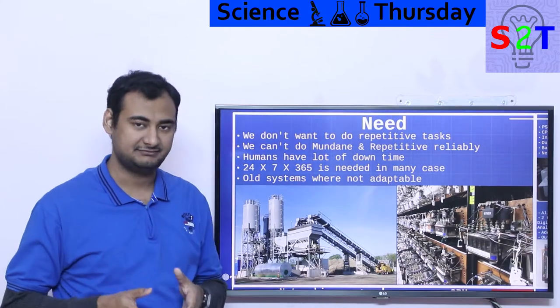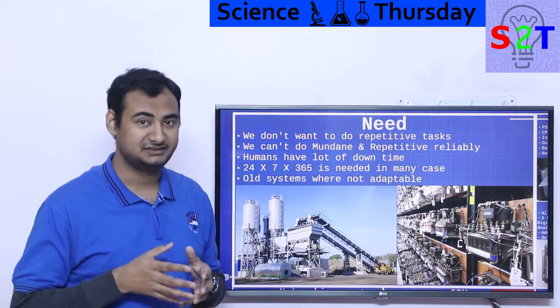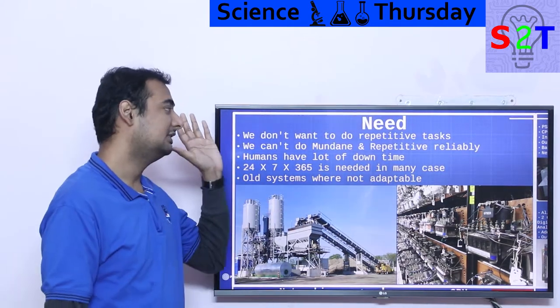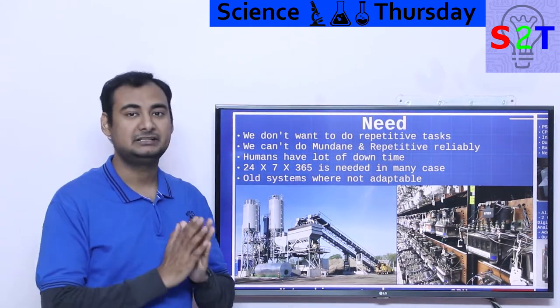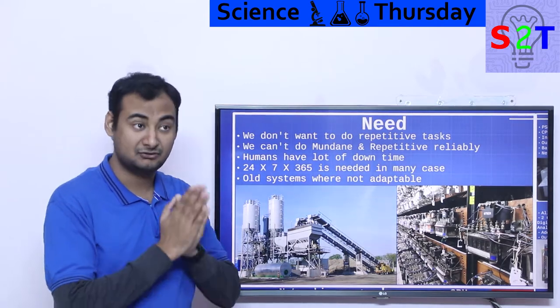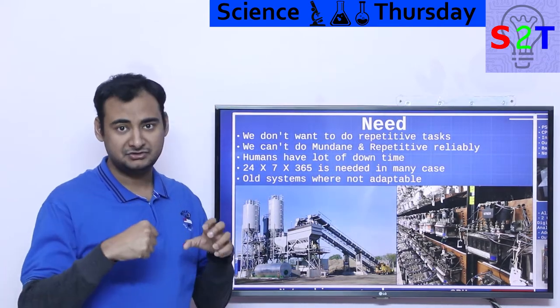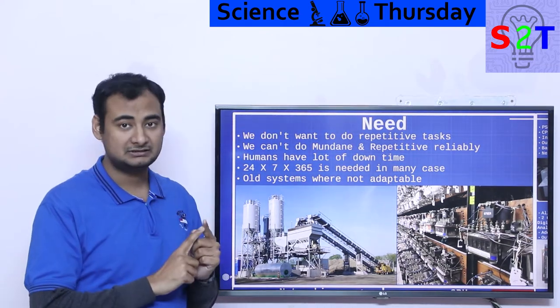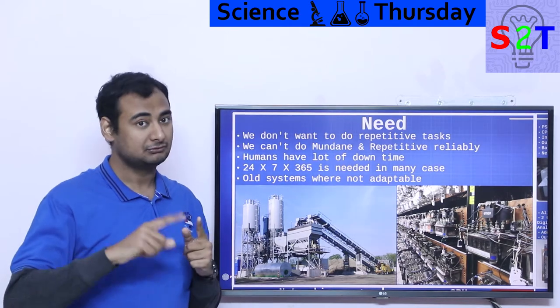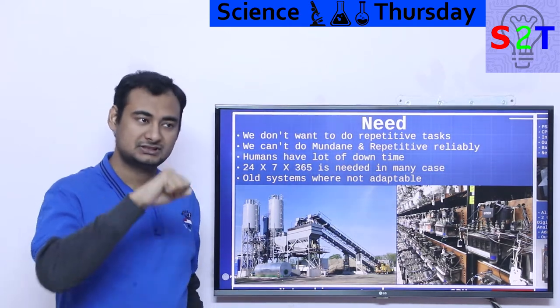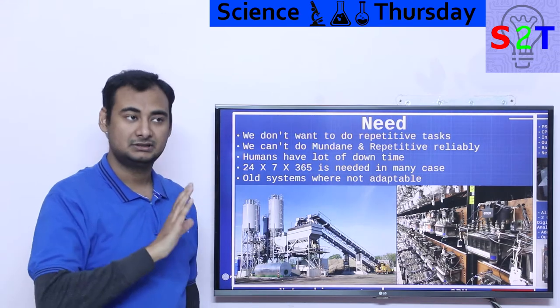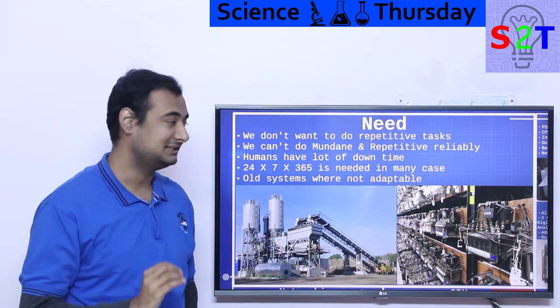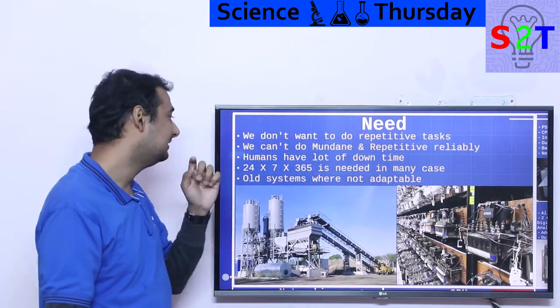Before we understand PLC, we have to understand what exactly is the need for such equipment. You have to understand this aspect about humans: we don't like repetitive tasks. Fundamentally, we humans are very bad at it. If you're doing something very simple, for example, let's say you're given a wrench and you have to torque it five times. If you torque it six times, you may break the bolt or weaken it. If you only torque it four times, it could unbolt. No matter which kind of person you find in the market, they will make a mistake.